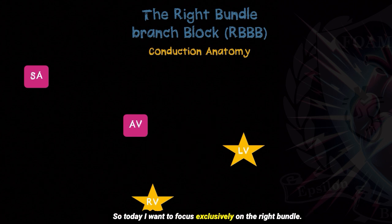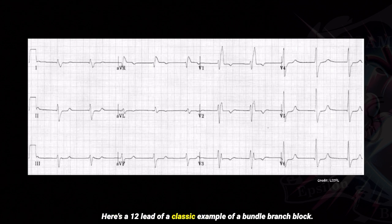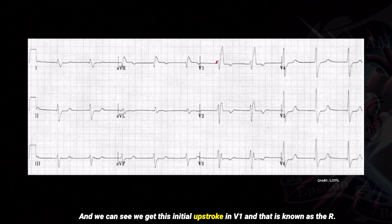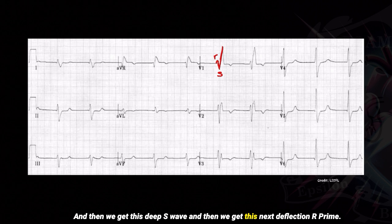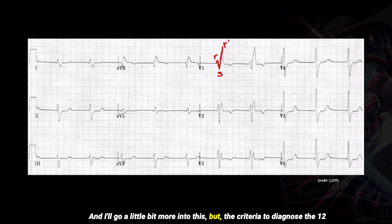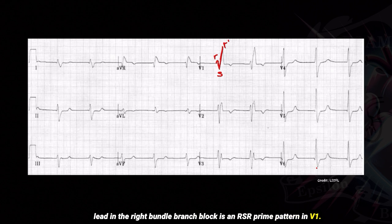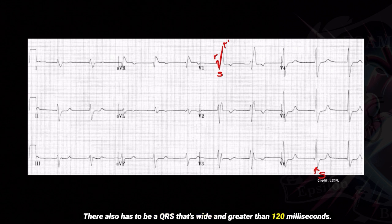Today I want to focus exclusively on the right bundle. Here's a 12-lead showing a classic example of a bundle branch block. We can see we get this initial upstroke in V1, known as the R, and then we get this deep S wave, and then the next deflection — R prime. The criteria to diagnose a right bundle branch block on a 12-lead is an RSR prime pattern in V1 and a deep S wave. There also has to be a QRS that's wide and greater than 120 milliseconds.